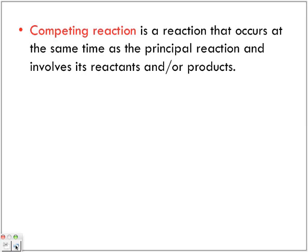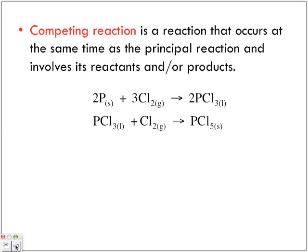Competing reaction is a reaction that occurs at the same time as the principal reaction and involves its reactants and/or products. So we have the following: two phosphorus plus three chlorine to produce two molecules of phosphorus trichloride. But note that of this phosphorus trichloride that we're producing, our final product in this reaction, that's the reaction we want.